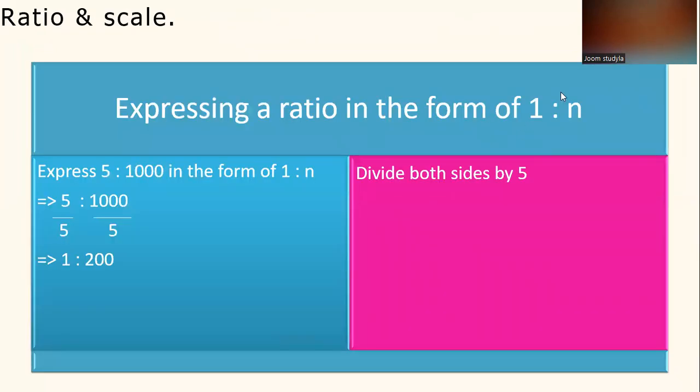Let's look at the topic of ratio and scale. How do we express a ratio in the form of 1 to N? Giving one example, express 5 to 1000 in the form of 1 to N. First and foremost, we have to divide both sides by 5. For example, 5 divided by 5 to 1000 divided by 5. So as a result, we get 1 to 200.